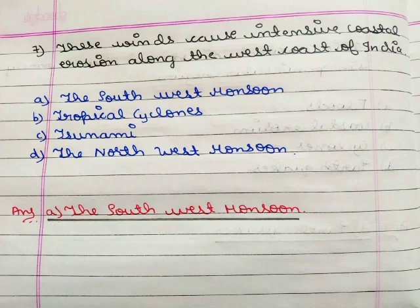Next question: these winds cause intensive coastal erosion along the west coast of India. Option A the southwest monsoon, option B tropical cyclones, option C tsunami, option D the northwest monsoon. The correct answer is option A the southwest monsoon.